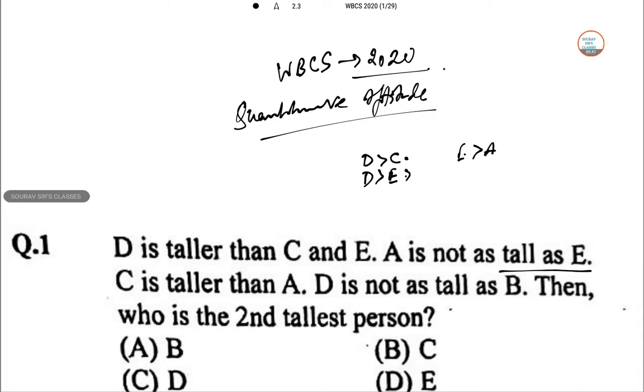So we can get an extended relation like this: D, E, A. C is taller than A. C is taller than A. So C again is taller than A. D is not as tall as B, so B again taller than D.